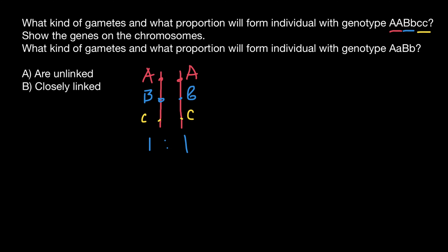You may ask: what if we have a crossing over? Let's take a look. For example, what would happen if crossing over happened here? We would have one chromosome that is capital A, small b, and small c — but this is the same variant we already have here. And the other would be capital A, capital B, and small c — but this is exactly the other variant we already have. So this crossing over doesn't change anything.